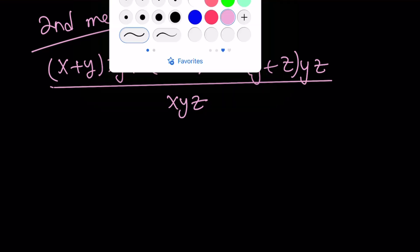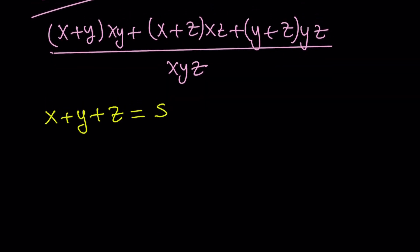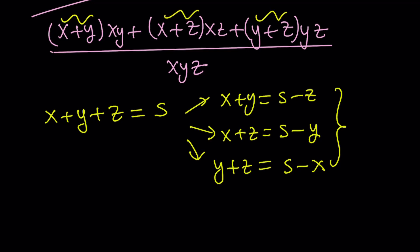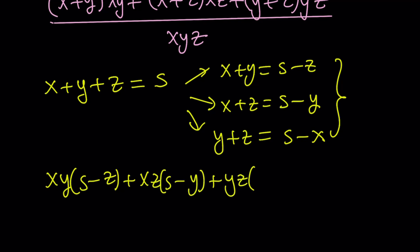I'm going to set something like x + y + z. Let's say we set it equal to s. S stands for sum here. So now this gives us three different things. x+y can be written as s-z. x+z can be written as s-y. And y+z can be written as s-x. And I'm going to be using all three here. Let's go ahead and make the substitutions. We're going to get xy multiplied by (s-z). And then we get xz times (s-y). And then yz times (s-x). And all of that is divided by xyz.